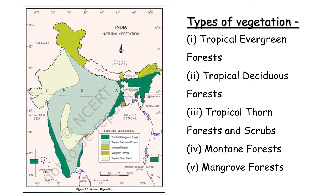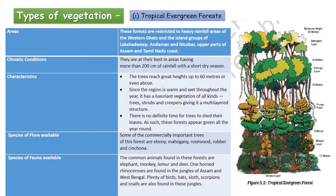Now let us look at the map of India and find out which type of vegetation is found in which areas. We have five different types of vegetation: tropical evergreen forest, tropical deciduous forest, tropical thorn forest and scrubs, mountain forests, and mangrove forests. We are going to understand the different types of forests through tables.